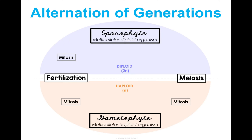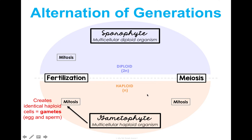Looking at the diagram, let's start with the gametophyte generation. The gametophyte is multicellular — there's more than one cell — but they are haploid, meaning they all only have one set of chromosomes. When these cells undergo mitosis, they make identical haploid cells, and these are the gametes: the egg and sperm.